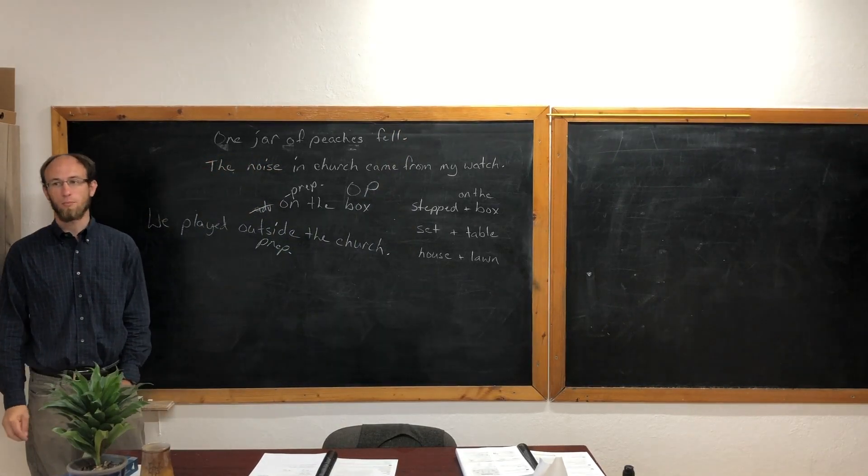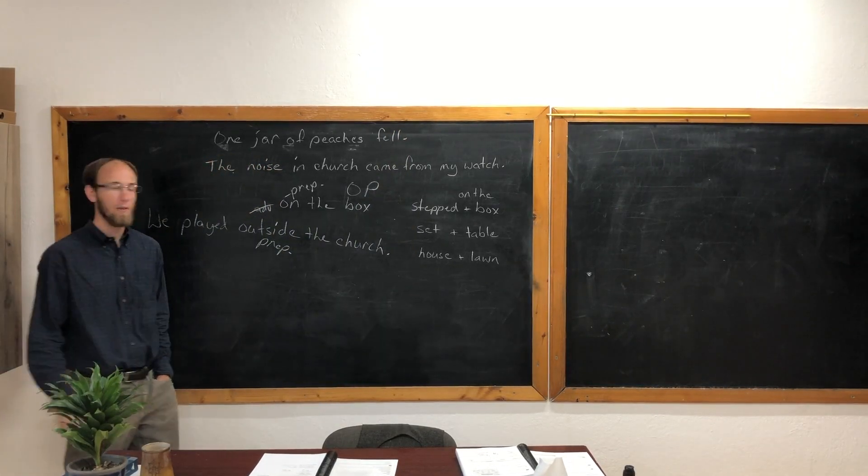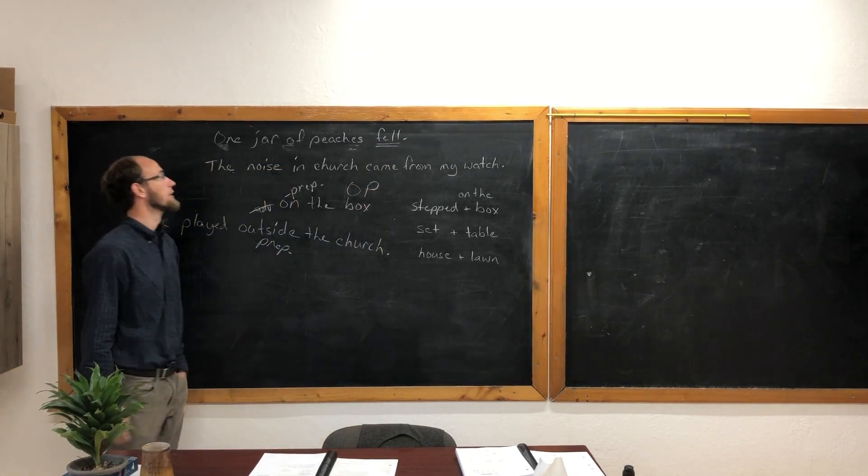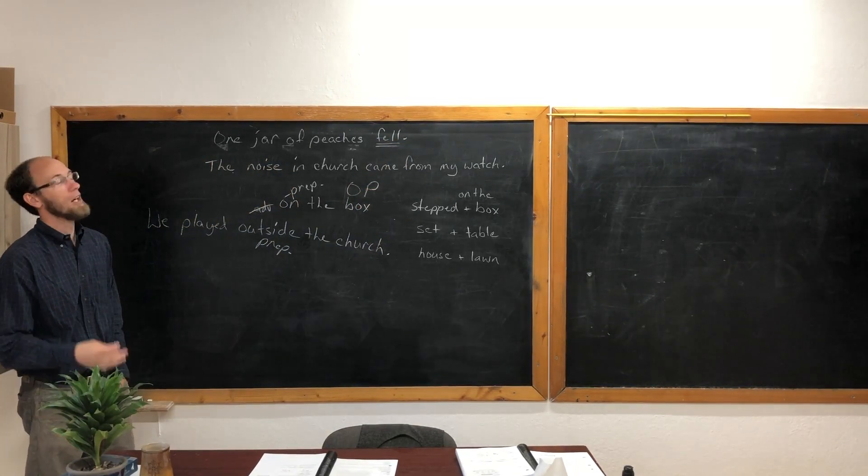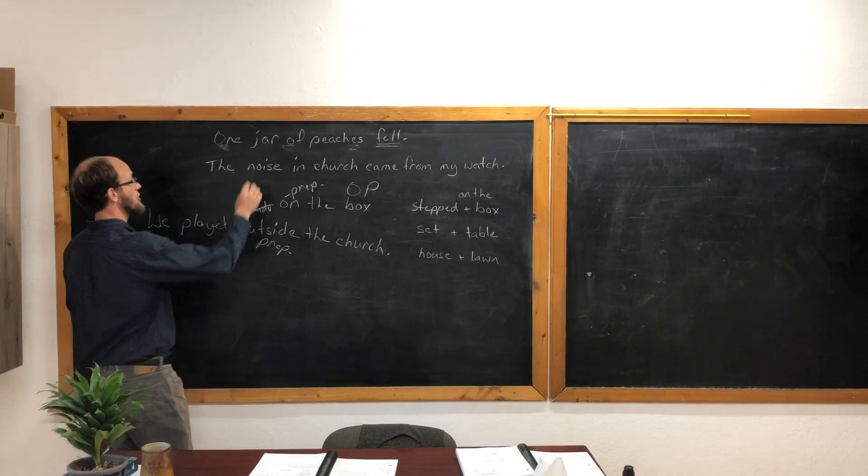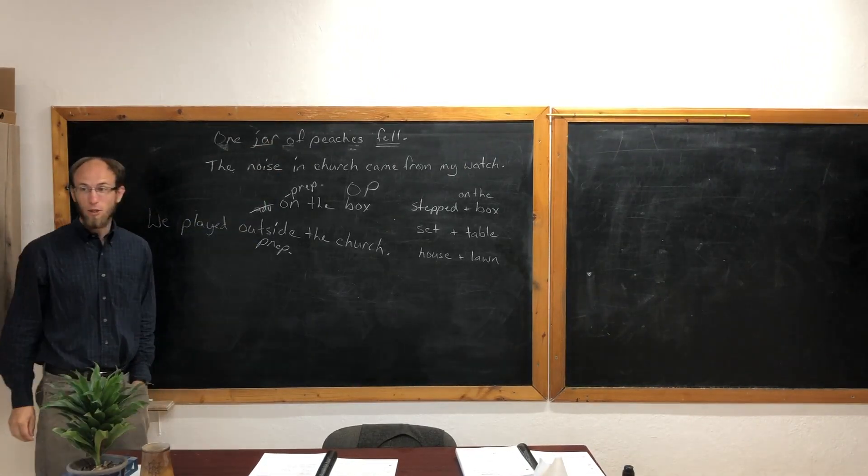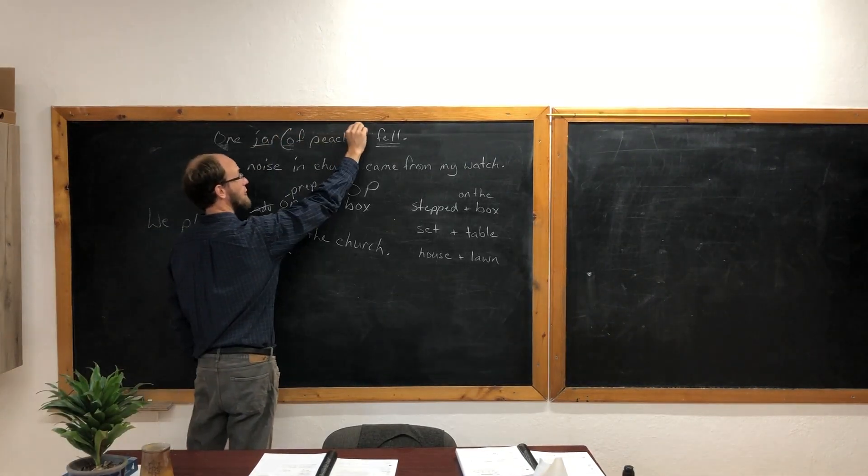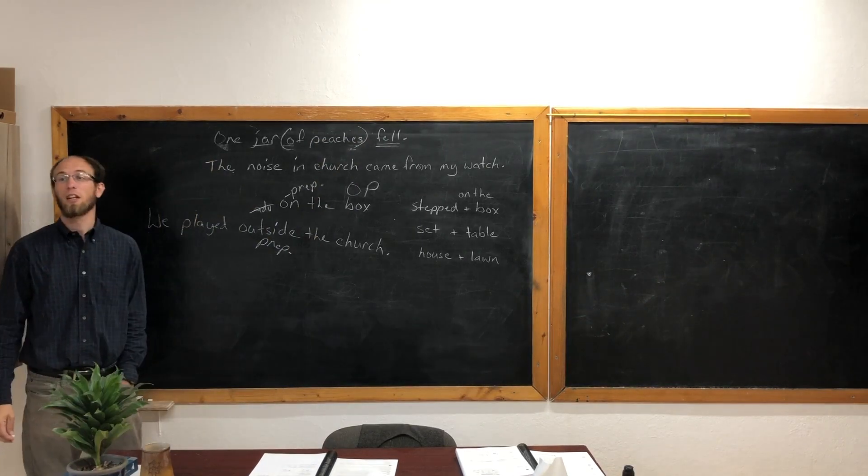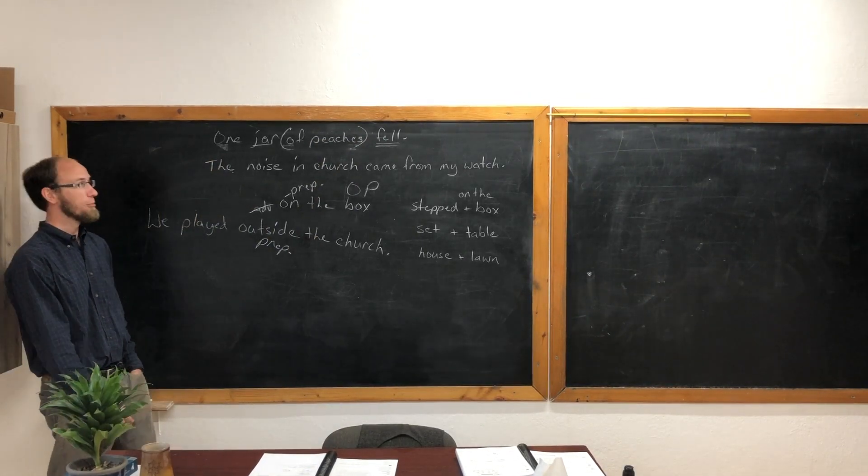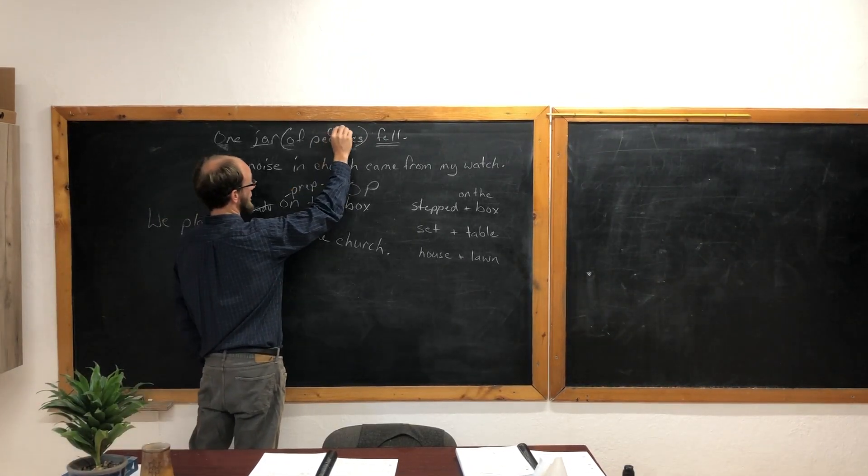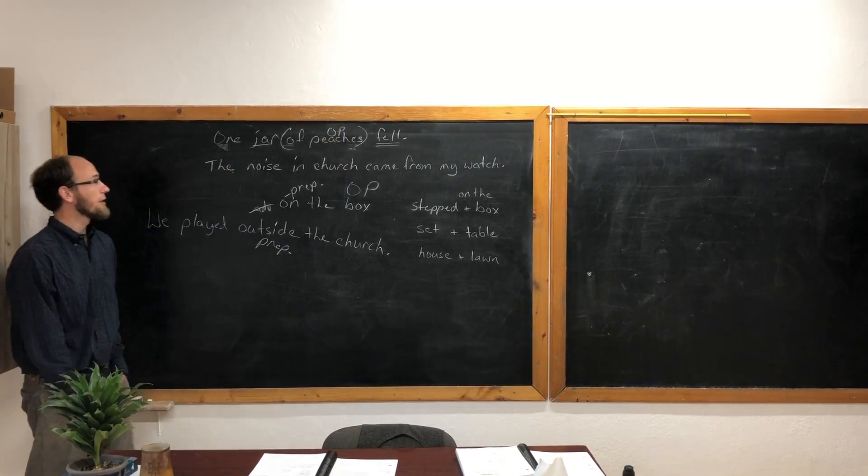And in that prepositional phrase, we will always find a noun or a pronoun. And that noun or pronoun is called the object of the preposition. Now, objects of prepositions are never, ever subjects of the sentence. Never, ever. Especially like this: one jar of peaches fell.